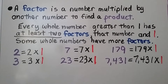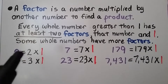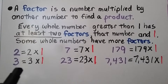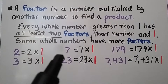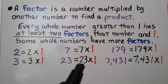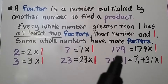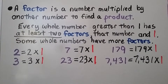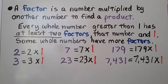A factor is a number multiplied by another number to find a product. Every whole number greater than 1 has at least two factors: that number itself and 1. Some whole numbers have more factors. So 2 has factors 1 and 2; 3 has factors 1 and 3; 7 has factors 1 and 7; 23 has factors 1 and 23. It doesn't matter how large the number is — 179 has factors 179 and 1, and 7,431 has factors 7,431 and 1.